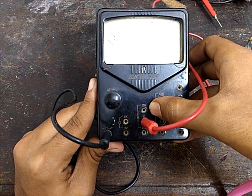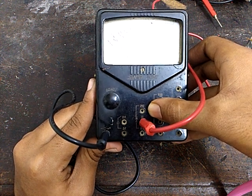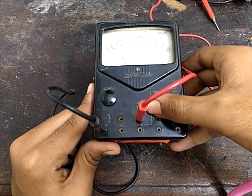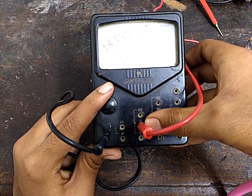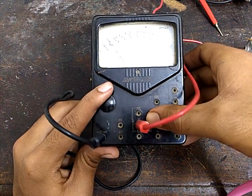If I connected to 250 volts, then the produced voltage will not be sufficient enough to deflect the needle in the multimeter. So I have connected to the 10 volt port.